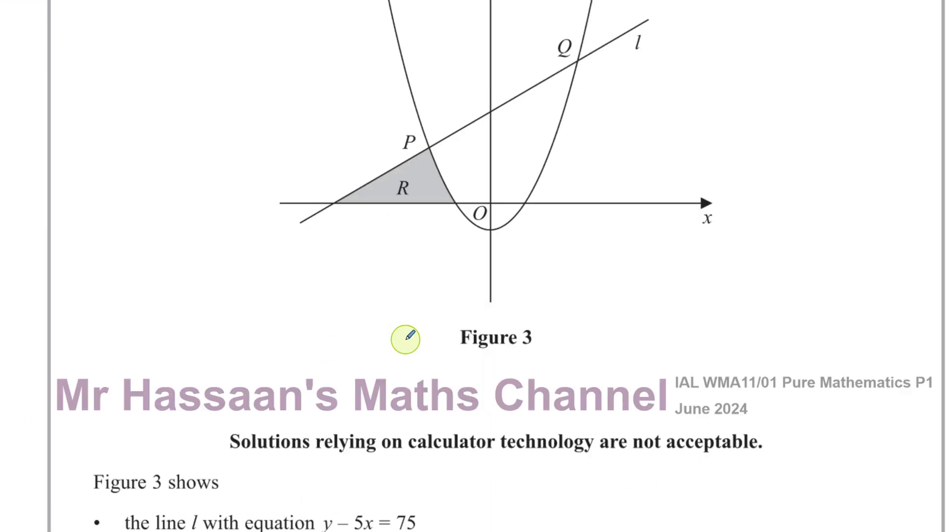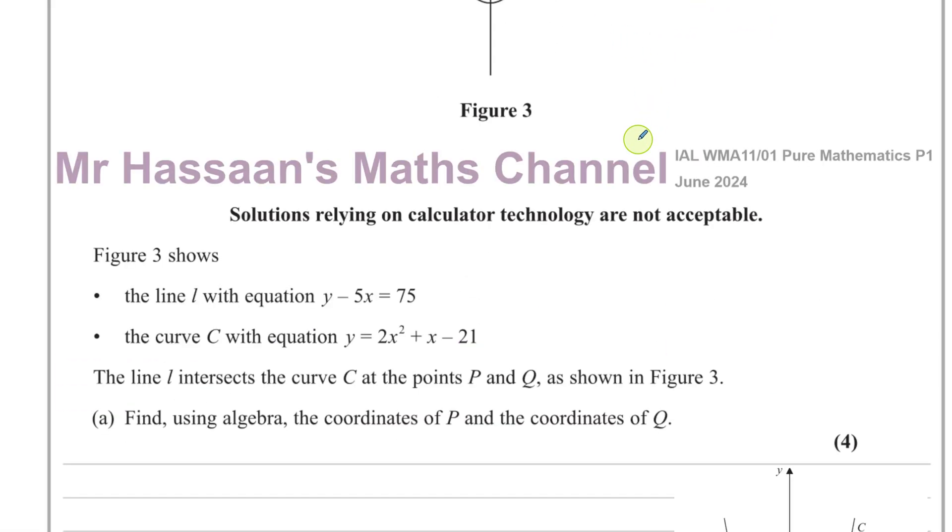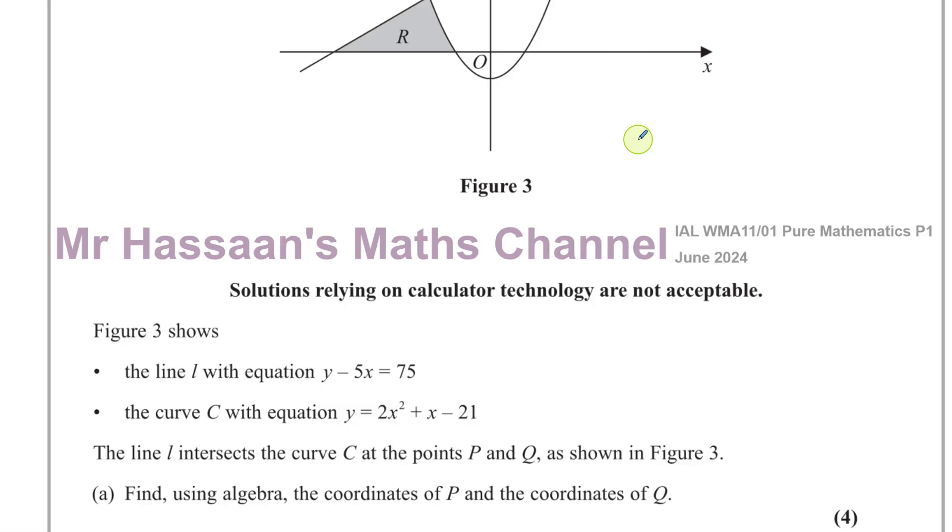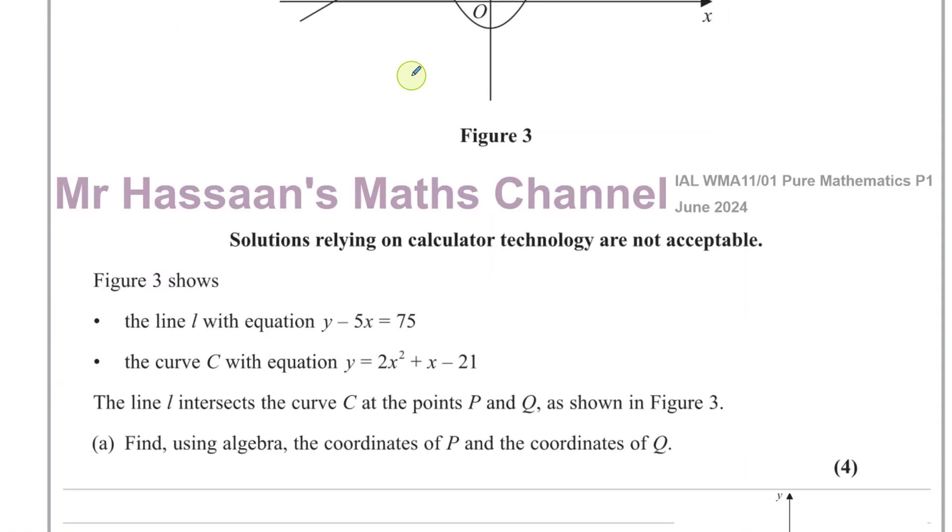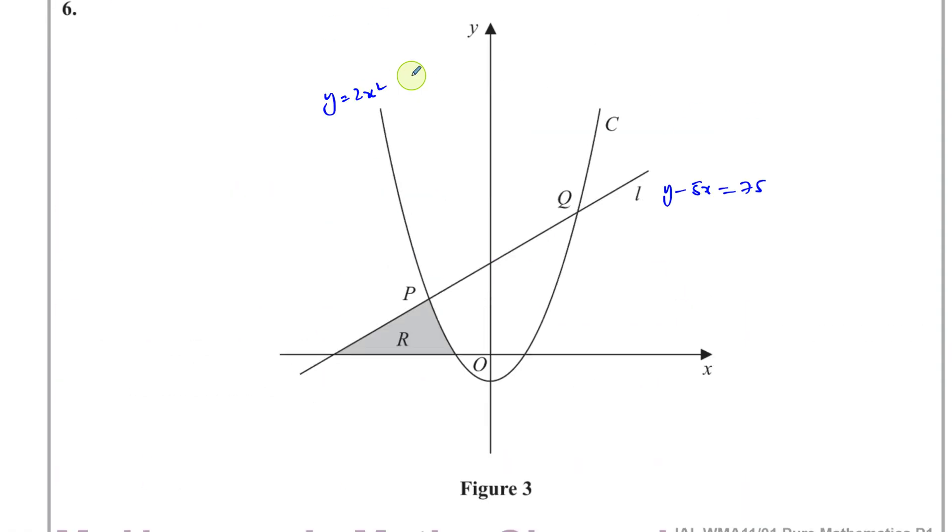Here we have a question about the line L with the equation y minus 5x equals 75. And we have also y equals 2x squared plus x minus 21, which is the equation of this curve.